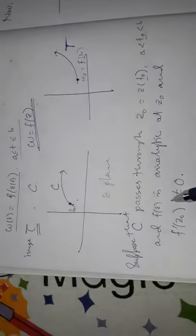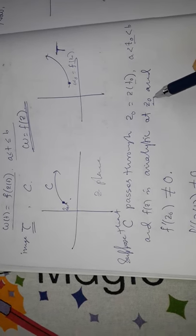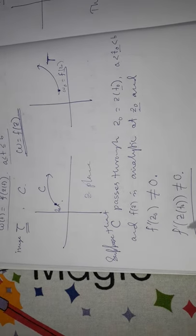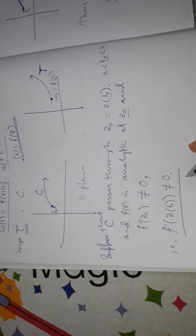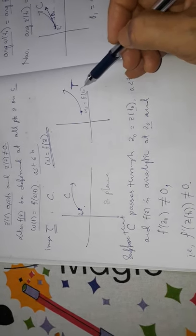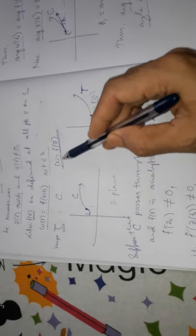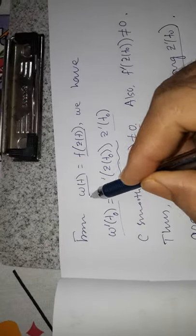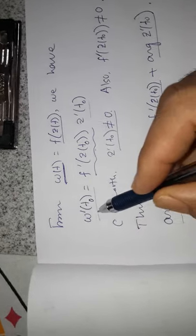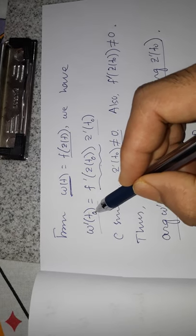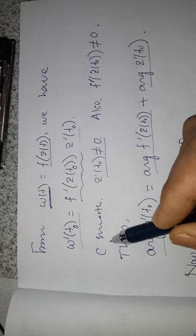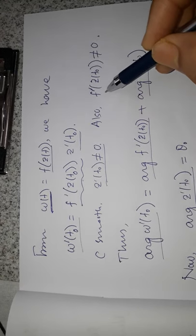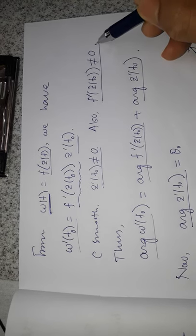Suppose that f(z) is analytic at z₀ and f'(z₀) is not equal to zero, which means f'(z(t₀)) is not equal to zero. So c passes through z₀ and the image gamma passes through w₀. By the chain rule applied to w(t) = f(z(t)), we have that w'(t₀) equals f'(z(t₀)) · z'(t₀). Since c is smooth, z'(t₀) ≠ 0, and by assumption f'(z(t₀)) ≠ 0.